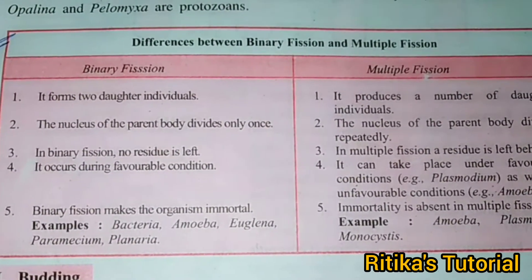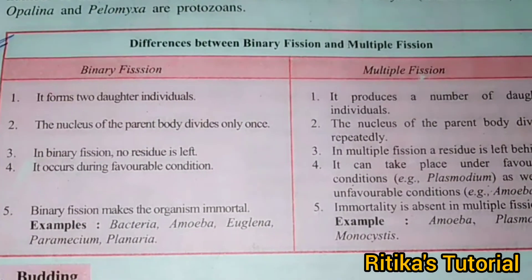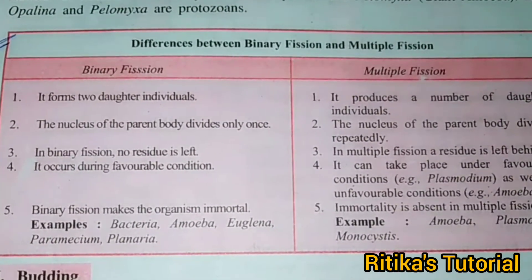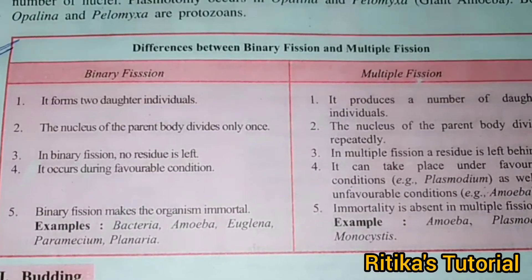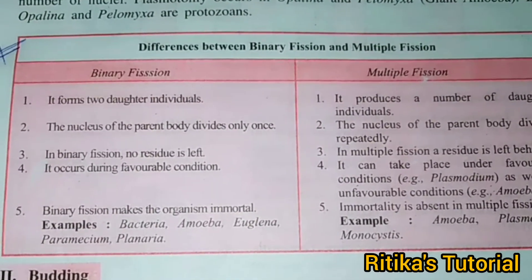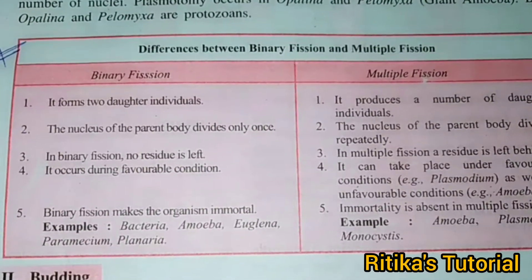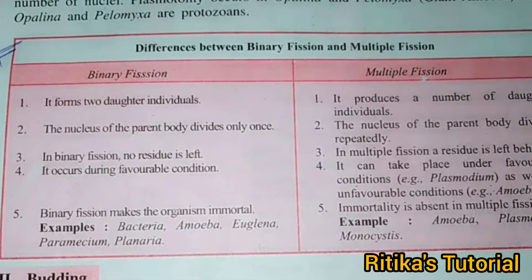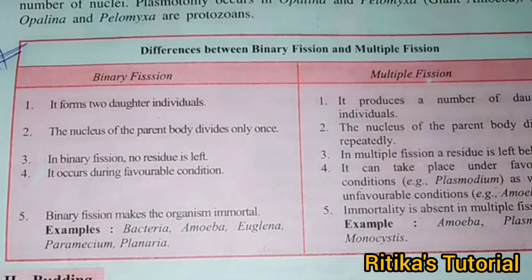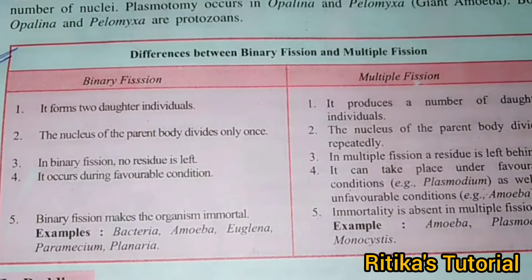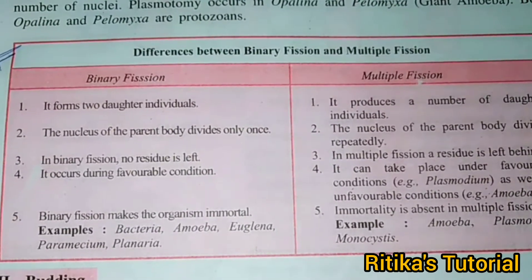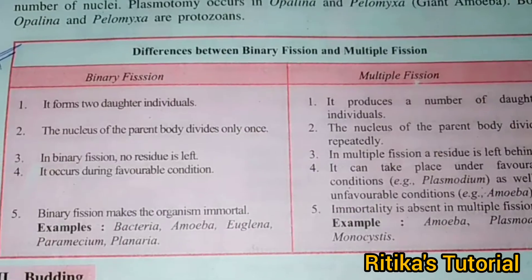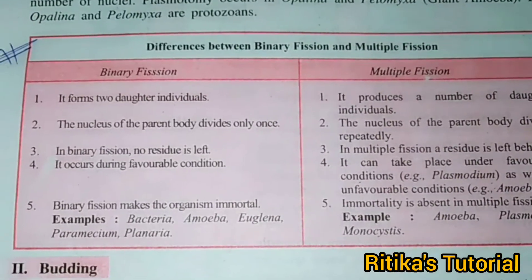Whereas in multiple fission, it produces a number of daughter individuals — many daughter individuals form from multiple fission. In binary fission, the nucleus of the parent body divides only once. Whereas in multiple fission, the parent body divides repeatedly.